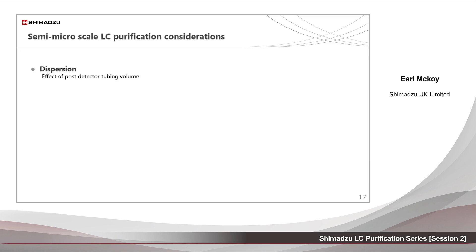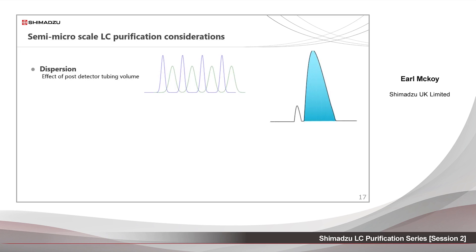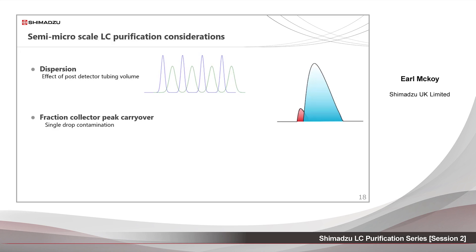Dispersion: excess volume in an LC system can cause many issues. In the case of semi-micro purification, too much volume after the detector will cause peaks to be diluted in the tubing. This may result in reduced peak purity. Unfortunately, because this occurs after the detector, it may not be so obvious to the user, but may result in poor purity when it is eventually checked.